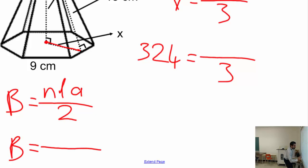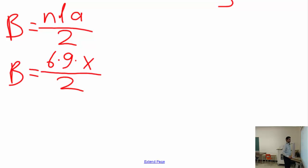Base area equals division by 2. n is the number of sides: 1, 2, 3, 4, 5, 6 - there are six sides here. Let's write that down. The side is one of the sides, 9 centimeters, and the apothem is the one we don't know, which is x. So let's organize this first.